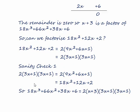So now we can say that 18x cubed plus 66x squared plus 38x plus 6 can be factorised into 2 times these three factors.